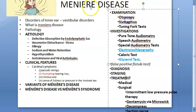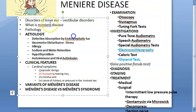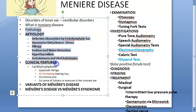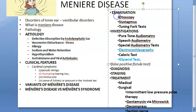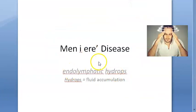In this video we look at the examination, investigations, diagnosis, staging, and treatment of Meniere's disease. In the previous video we looked at what Meniere's disease is — a disorder of the inner ear called endolymphatic hydrops — covering pathology, etiology, clinical features, variants, and Meniere's disease versus Meniere's syndrome.